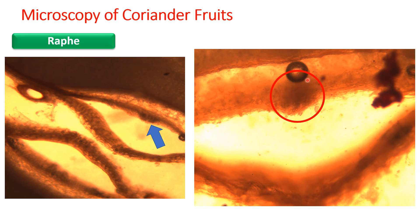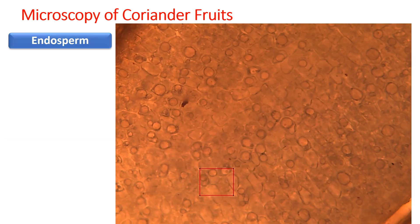The raphae, as discussed earlier, is the centermost vascular bundle. You can see a single zoomed image of the raphae with lignified cells in it. Lastly, the innermost region of the seed is the endosperm, which is rich in oil globules. On staining with Sudan Red 3 it gives a pinkish or reddish tint to the oil globules. Aleurone grains are also present here, which can be stained with picric acid, similarly to nux vomica seeds. This concludes the morphology and microscopy of coriander fruits.